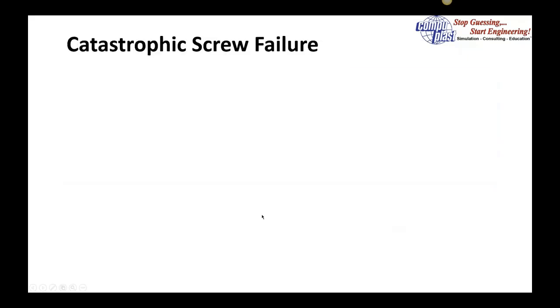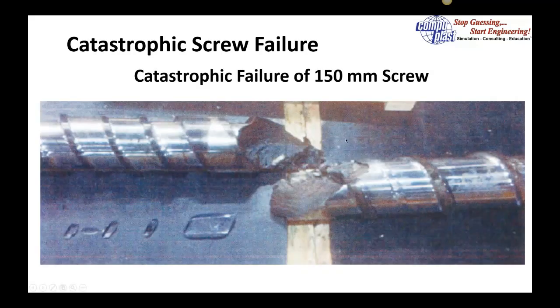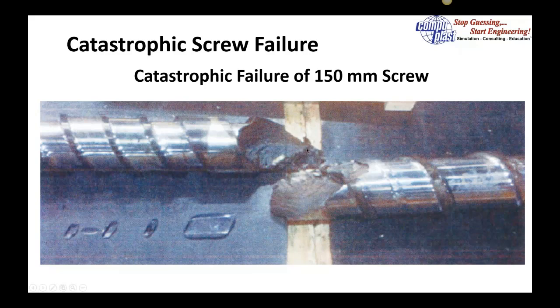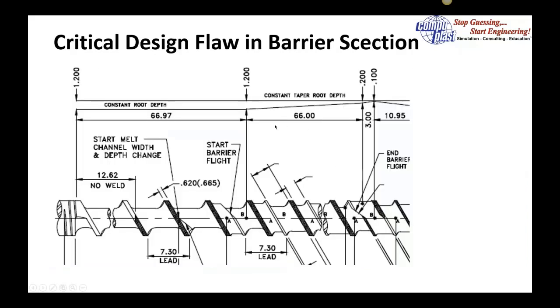The next example is catastrophic screw failure with a 150 mm screw that breaks. You can see the break isn't happening in the feed section, it's actually in one of the thickest parts of the screw. Here's a partial drawing of this screw. We're going to focus on the compression section of the barrier section. We have a solids channel and a melt channel. The feed depth is 1.2 inches and it compresses to 200 thou, then to 100 thou. The issue here is we have a lead of 7.3 inches, so it's 7.3 inches for one rotation, and the compression from 200 to 100 is happening in three inches—less than half a turn. We're compressing this channel very abruptly.